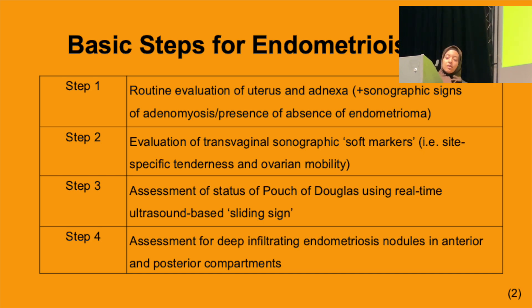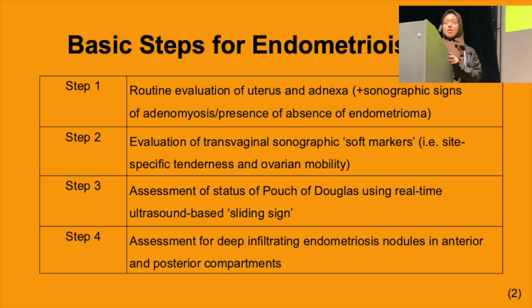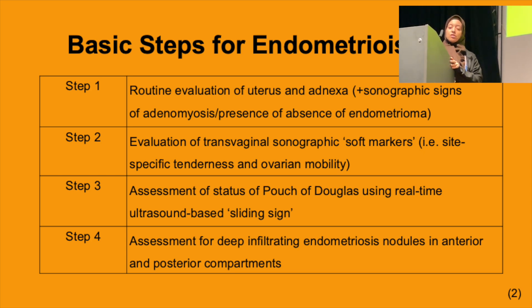Looking at the IDEA criteria, the basic steps required for endometriosis scanning: Step one is the routine evaluation of the uterus and adnexa. We're looking for signs, particularly of adenomyosis, and the presence of endometriomas.